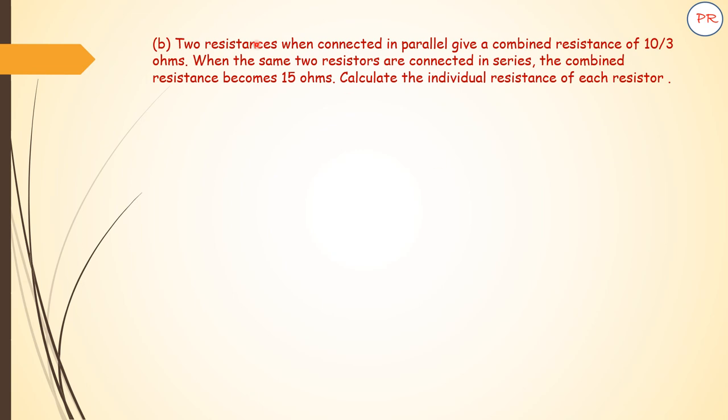Question B: Two resistances when connected in parallel give a combined resistance of 10 by 3 ohms. When the same two resistors are connected in series, the combined resistance becomes 15 ohms. Calculate the individual resistance of each resistor. Let us see the solution. First step, let the two resistances be R1 and R2.